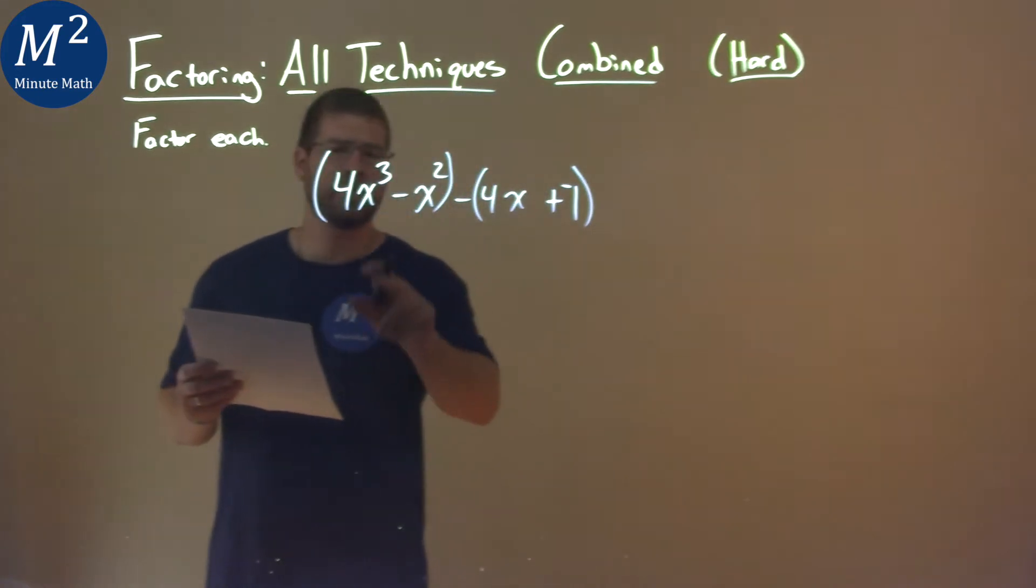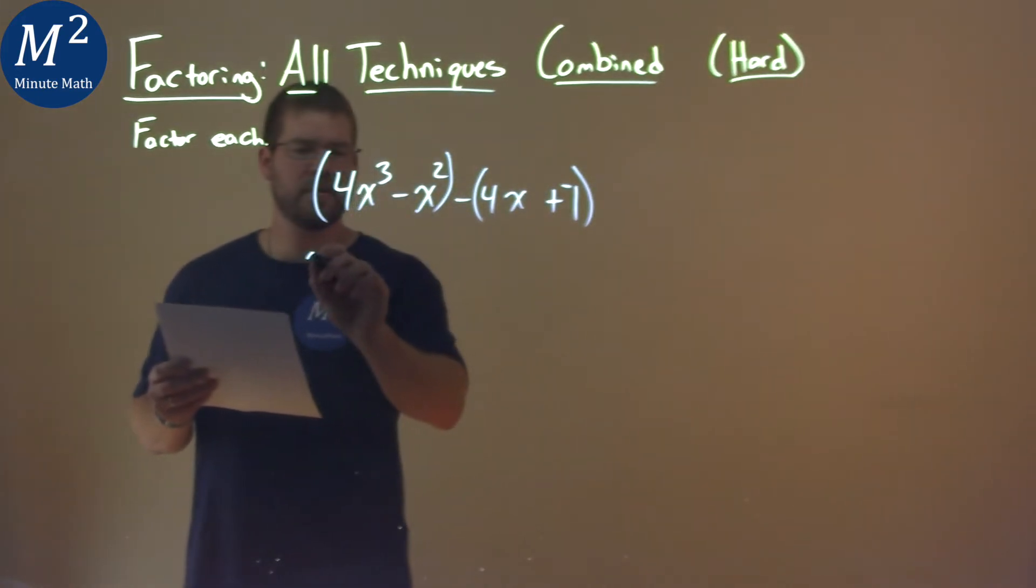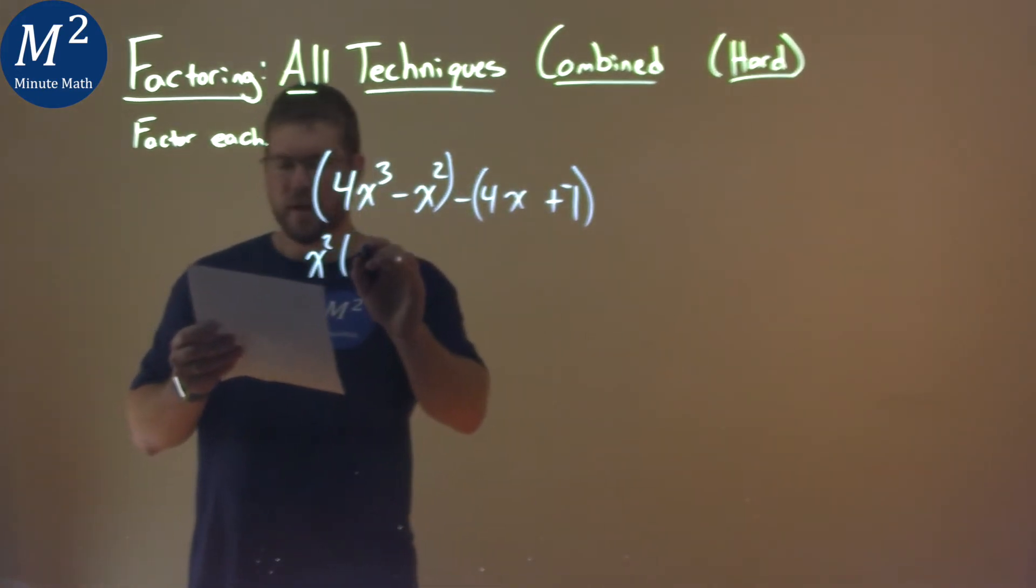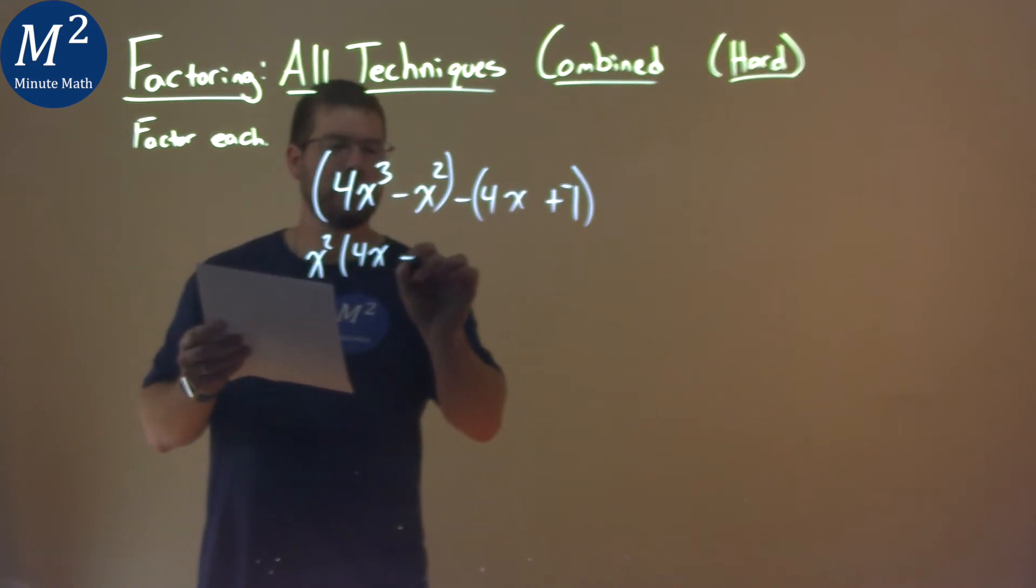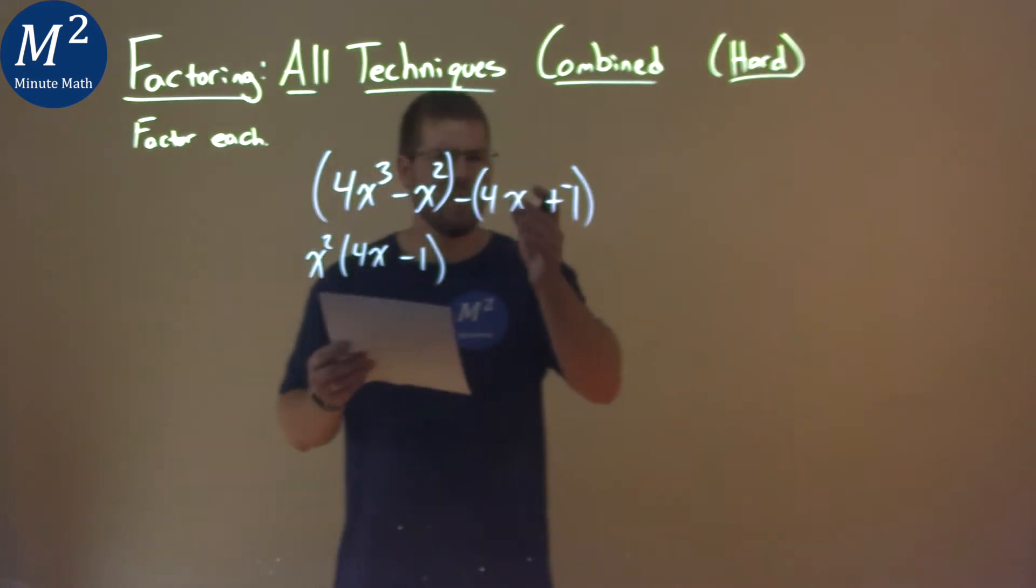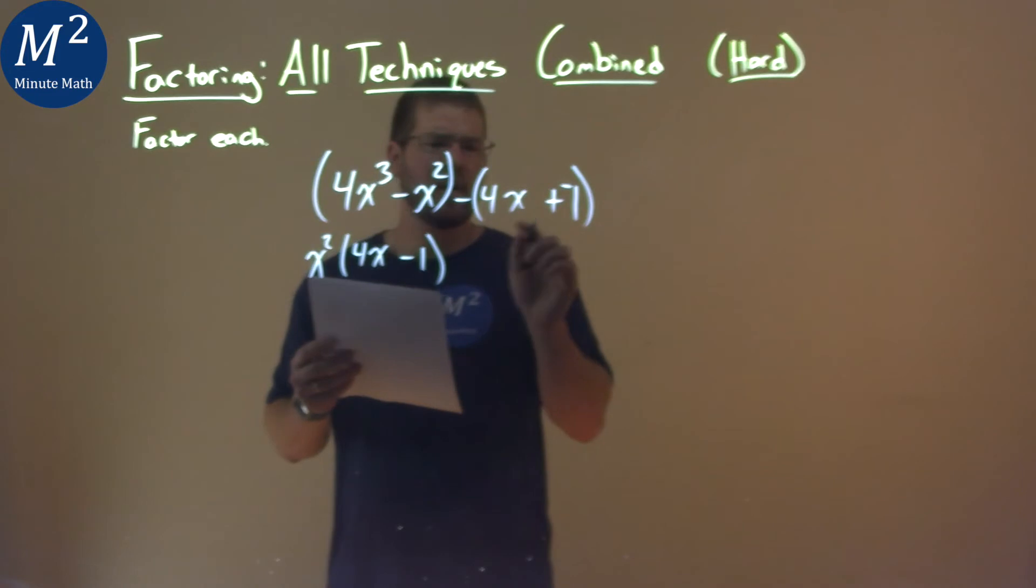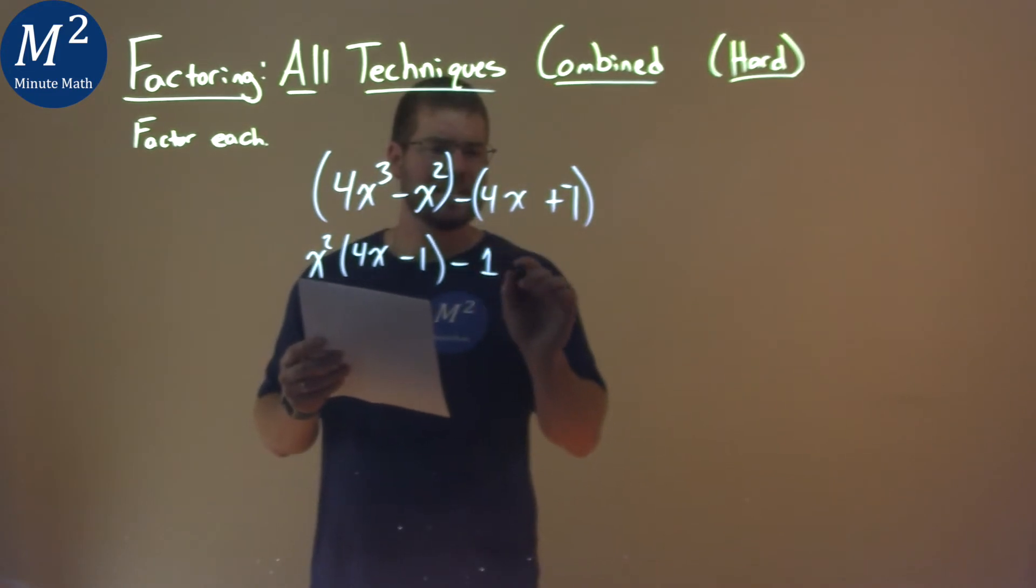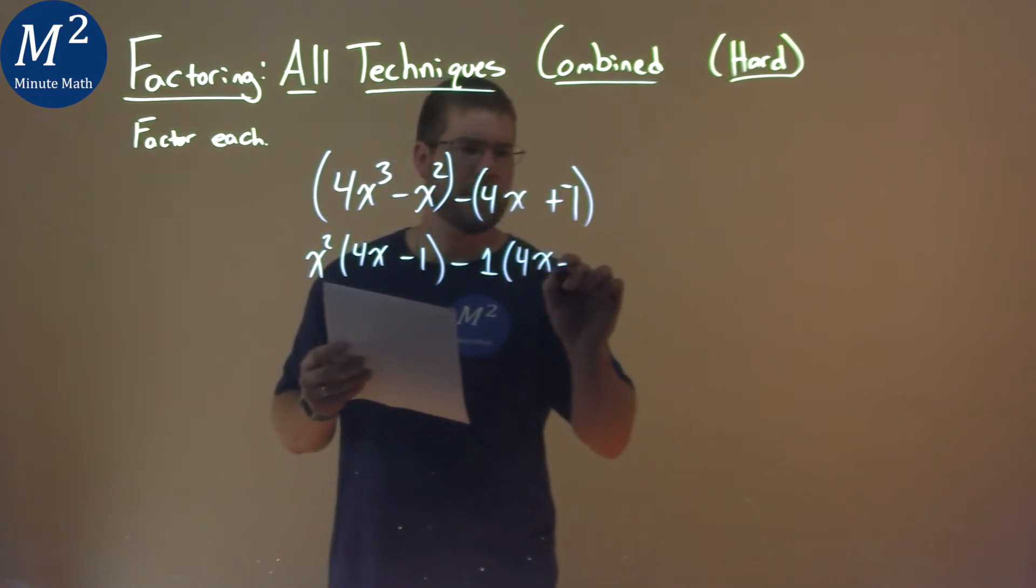So let's pull out a common term, x squared is in both parts here, so we have now left x squared times 4x minus 1. The right hand side, well, no common term, but we'll just pull out a 1 so we can see that, and we have 4x minus 1 here.